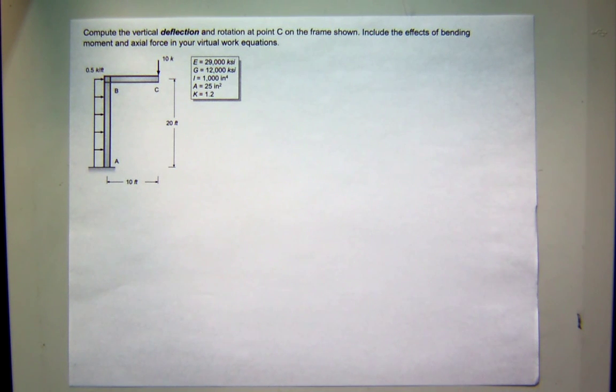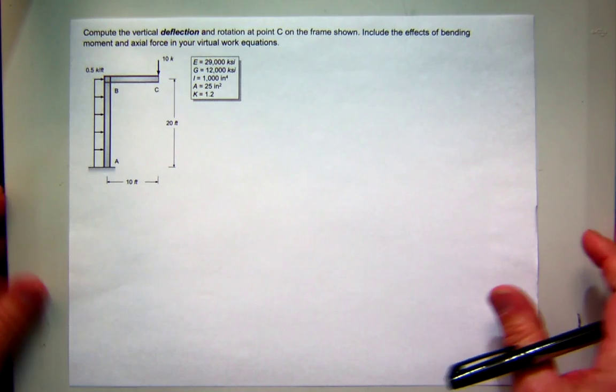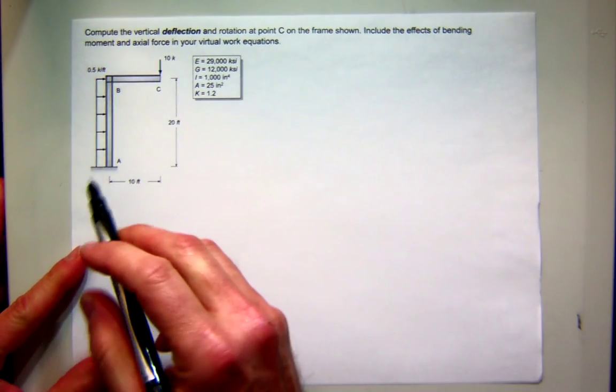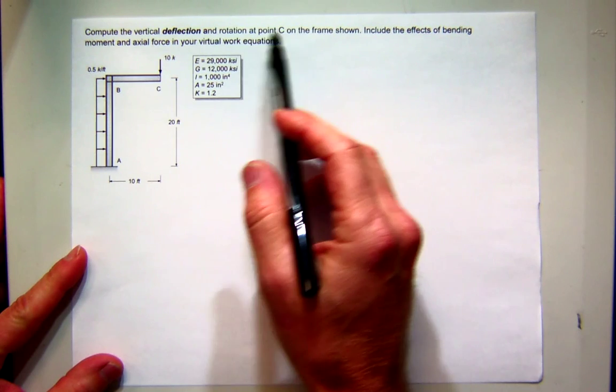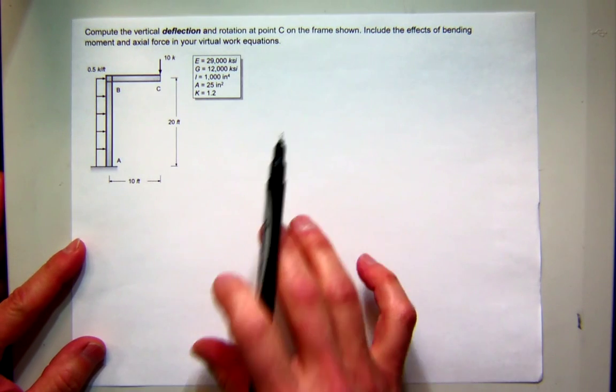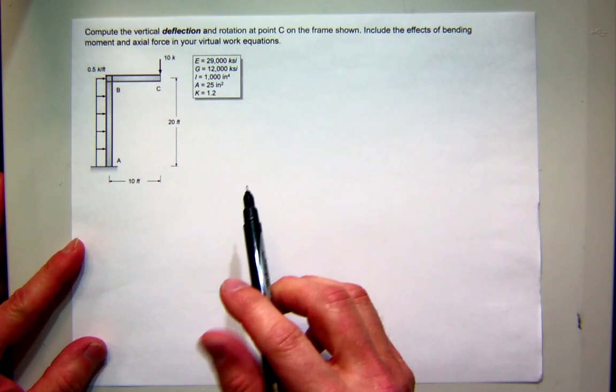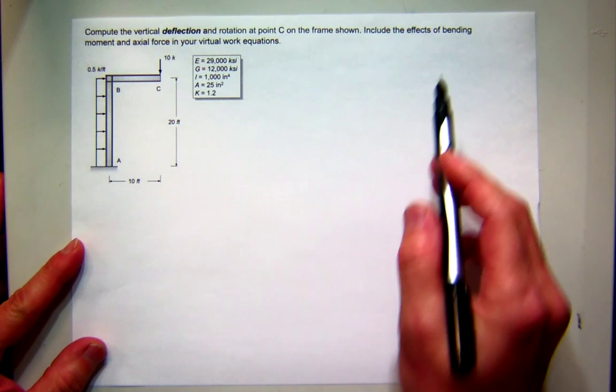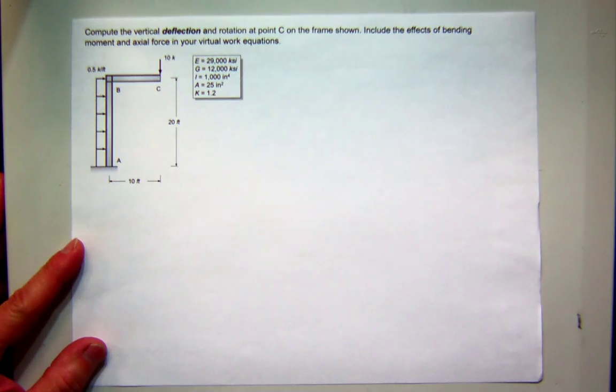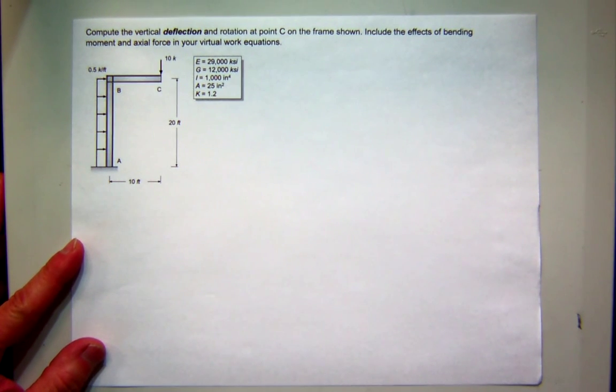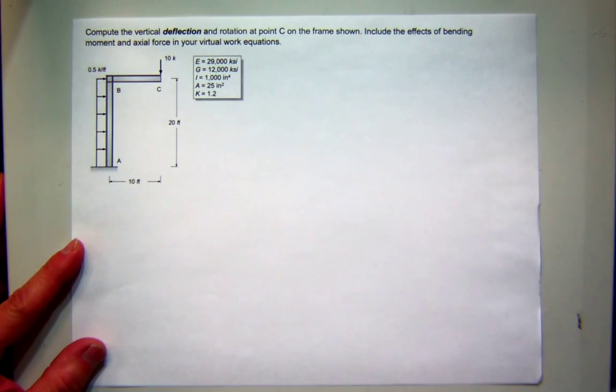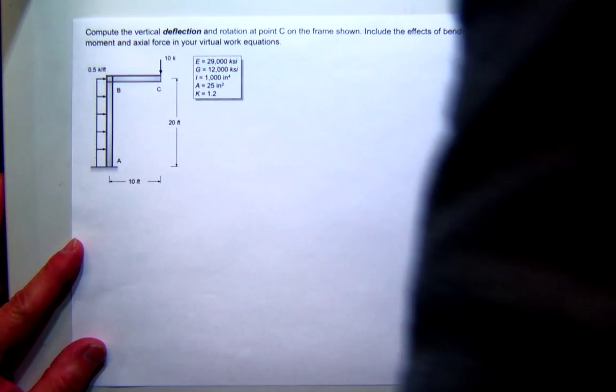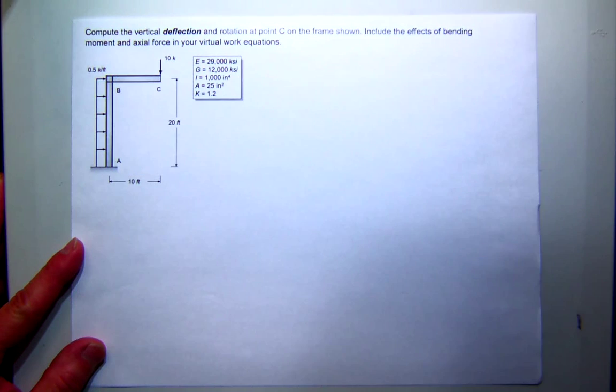Alright, let's consider this frame and read the problem first. We want to compute the vertical deflection and rotation at C. I think just to make this a little shorter today, we'll just do the displacement. It says include bending moment and the axial force. I'll see if we have time for that.